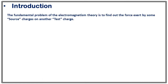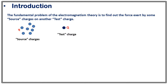As everything in electromagnetism is related to charge, the fundamental problem of electromagnetic theory is to find the force exerted by some source charges on another test charge. Let's say we have a bunch of source charges and we want to find the force exerted on a test charge Q by this bunch of source charges. This is the fundamental problem of electromagnetic theory.